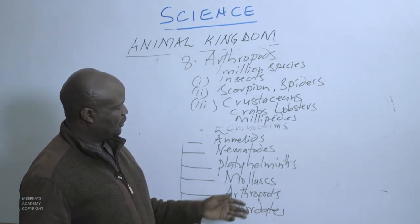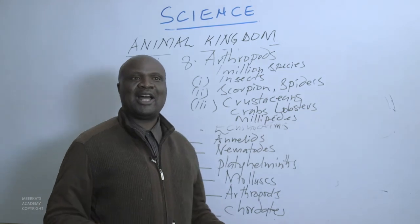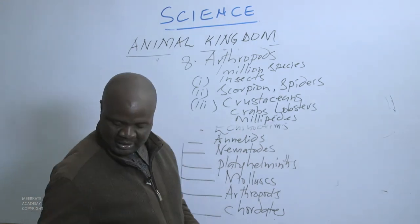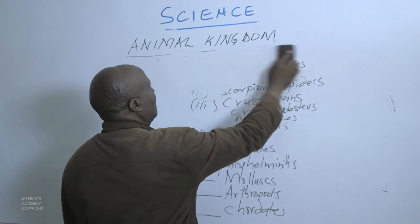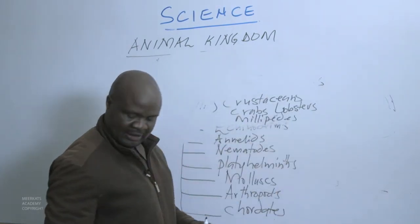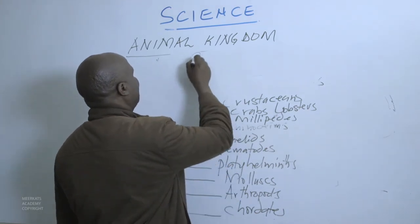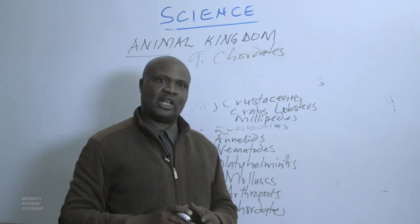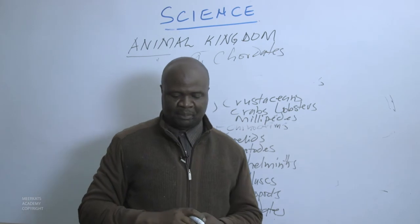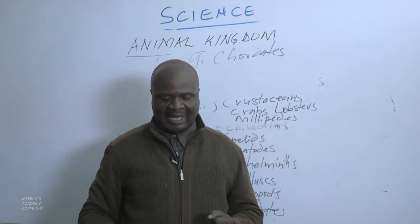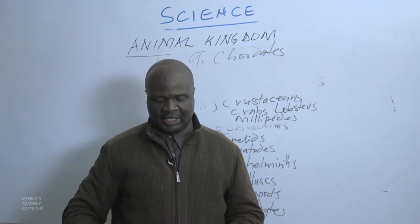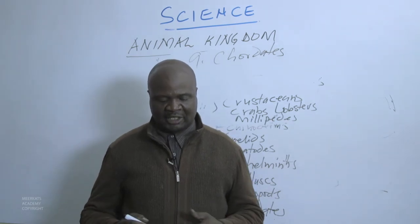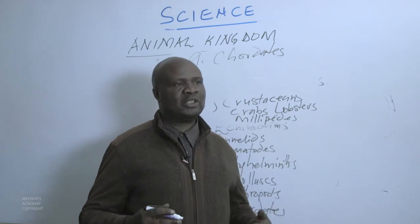We have seen examples of Arthropods including insects. We are now looking at the last phylum — the Chordates — which is the ninth phylum. The Chordates are the largest animals; the biggest animals belong to this phylum. They can be described as vertebrates because they have backbones.